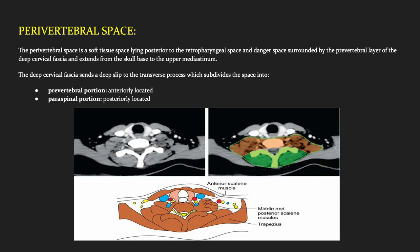The perivertebral space is a soft tissue space lying posterior to the retropharyngeal and danger space, surrounded by the prevertebral layer of deep cervical fascia, and extends from the skull base to the upper mediastinum. The deep cervical fascia sends a deep slip to the transverse process which divides the space into the prevertebral portion and the paraspinal portion.